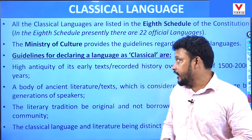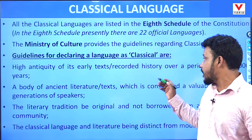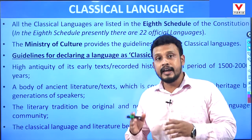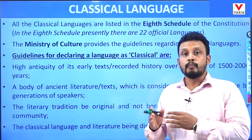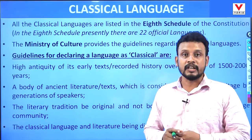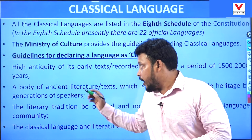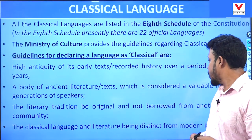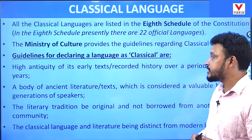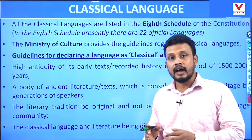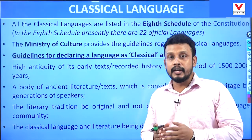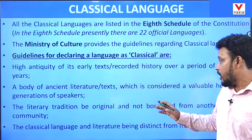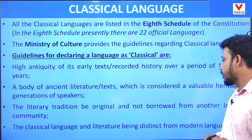The criteria include: the high antiquity of its early texts recorded over a period of 1500 to 2000 years; a body of ancient literature and texts which is considered a valuable heritage by its generational speakers; and the literary tradition must be original, not borrowed from another language community.